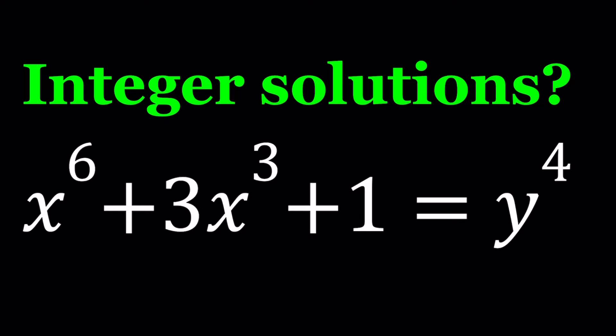Hello everyone. In this video we're going to be solving a nice Diophantine equation from Romania. We have x to the 6th power plus 3x to the 3rd power plus 1 equals y to the 4th power. And we're looking for integer solutions. That's why this is called a Diophantine equation.